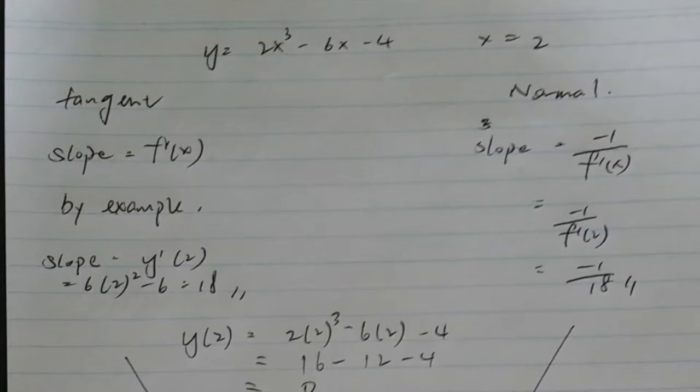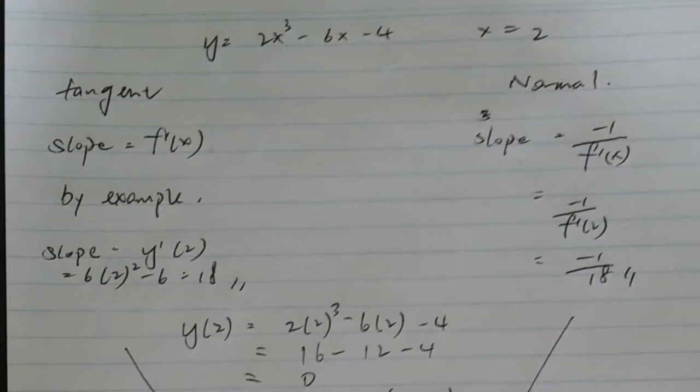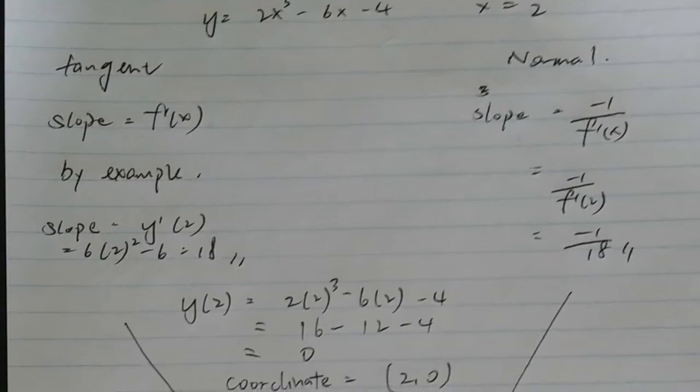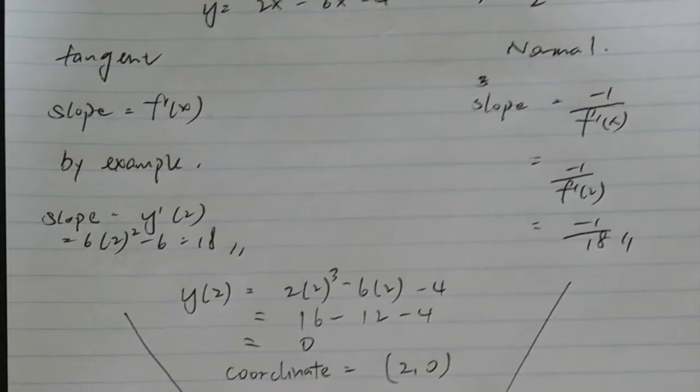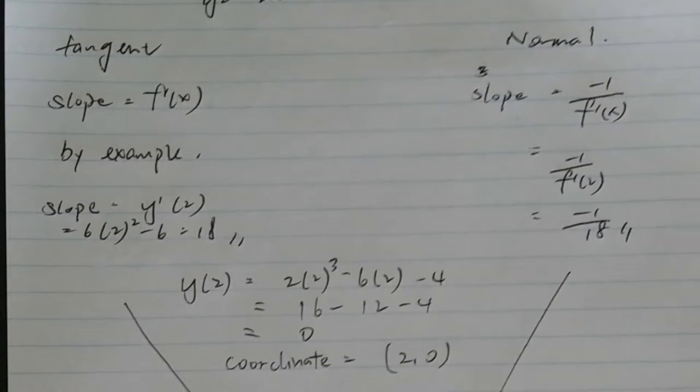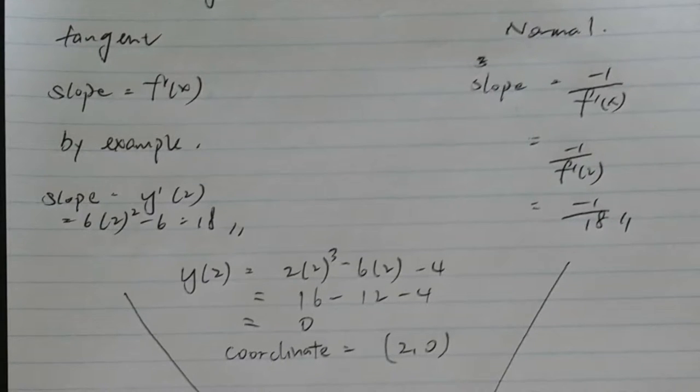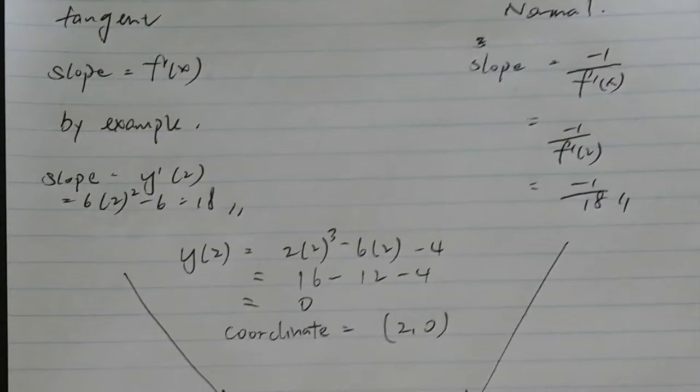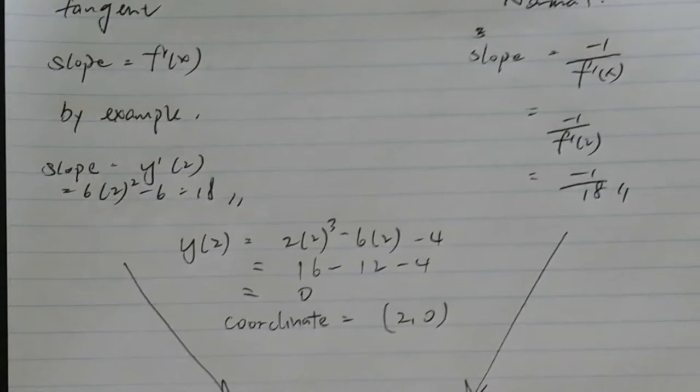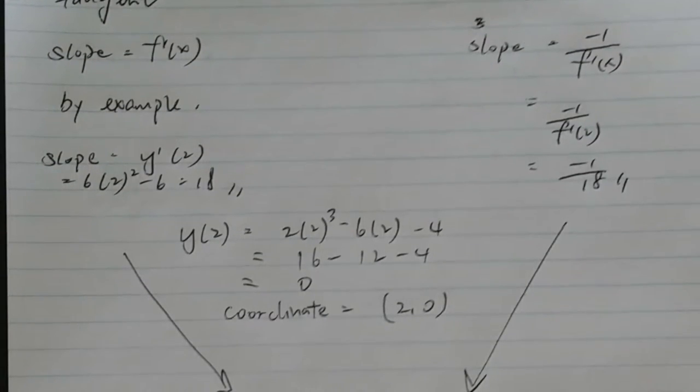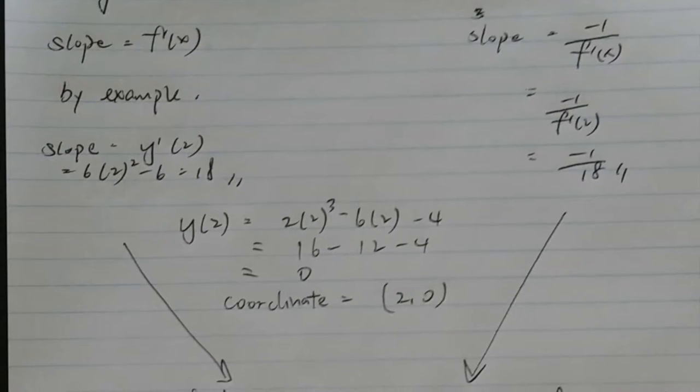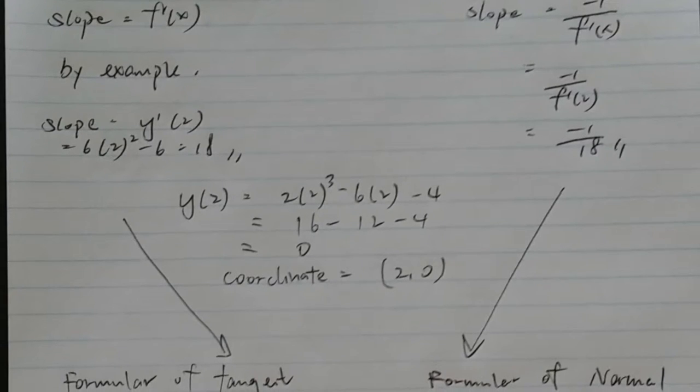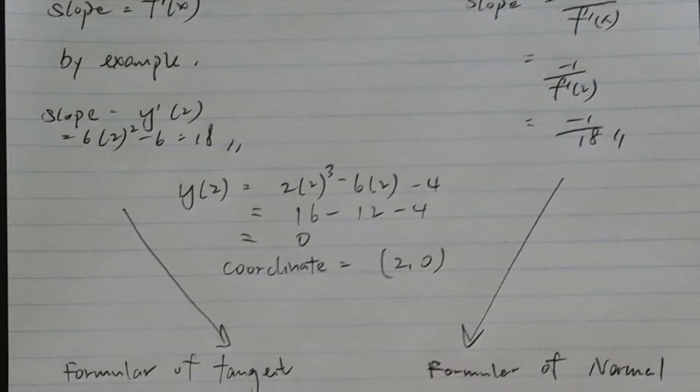And how for the normal, it is minus 1 over f dash x. Minus 1 over f dash 2 equals to minus 1 over 18. This is the slope of normal. After we find out the slope of tangent and normal, we check what is the coordinate of x equals to 2. We sub it into y. I find out that the coordinate is 2 and 0.